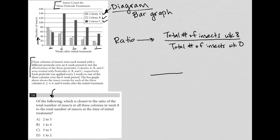Total number of insects week eight. So week eight, we have for colony A, so let's start there. This is 20. It looks like our colony A line is just below that. So I'm going to say colony A is equal to, let's call it 19. I could be off a little bit, but it shouldn't matter.